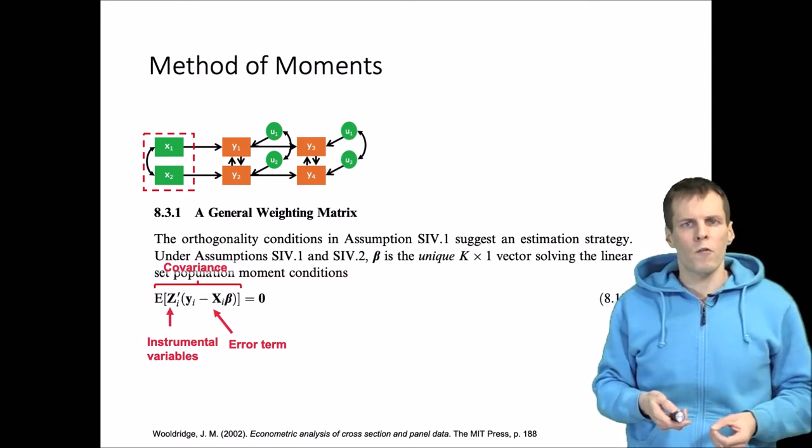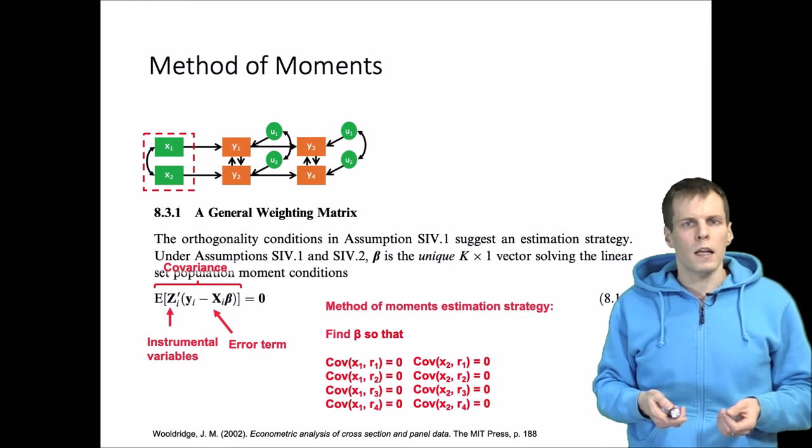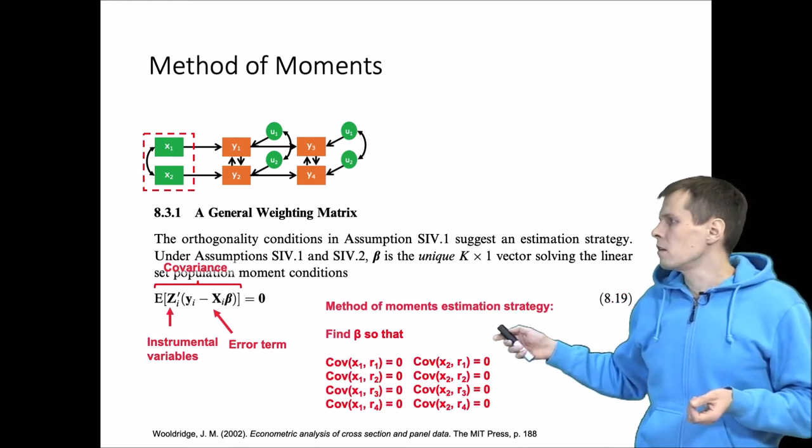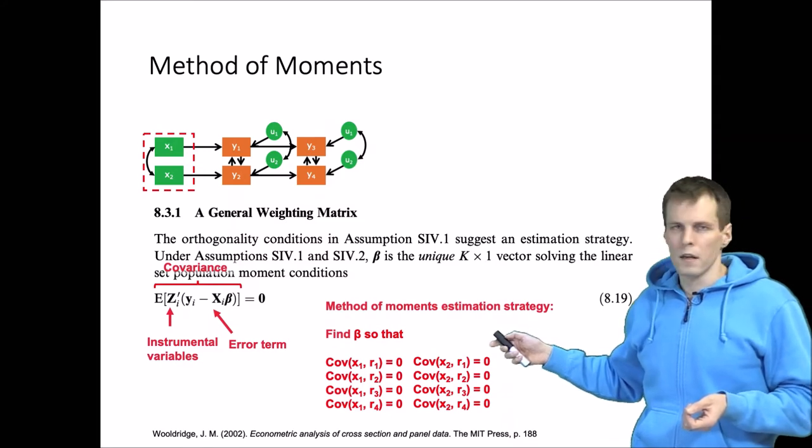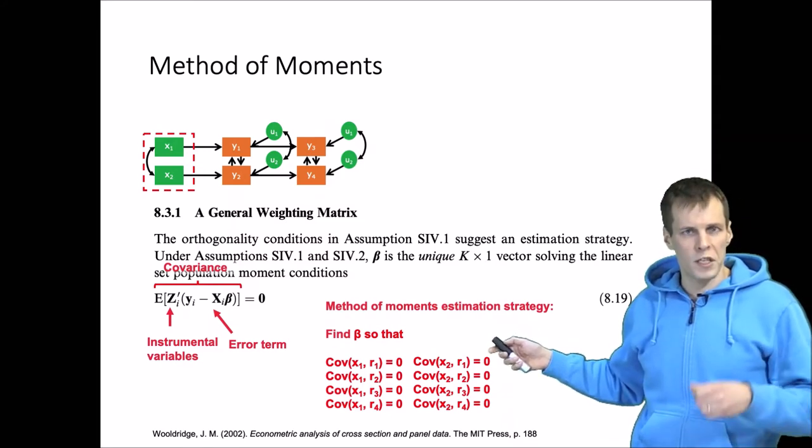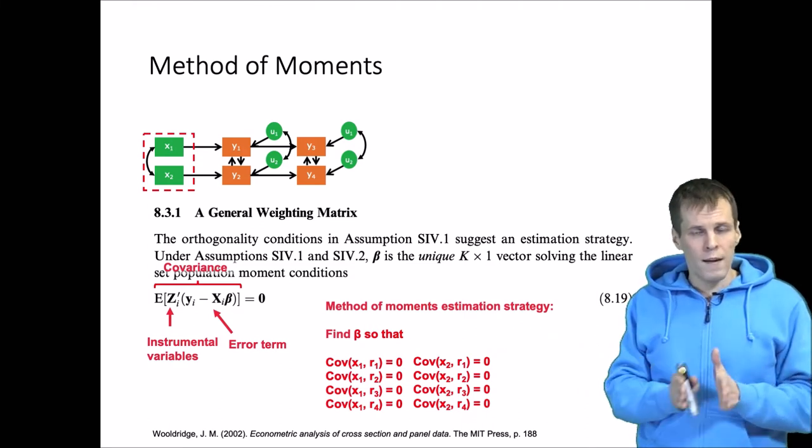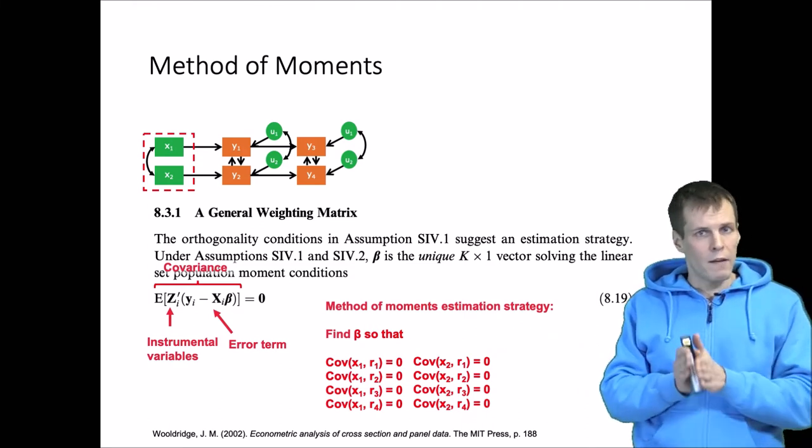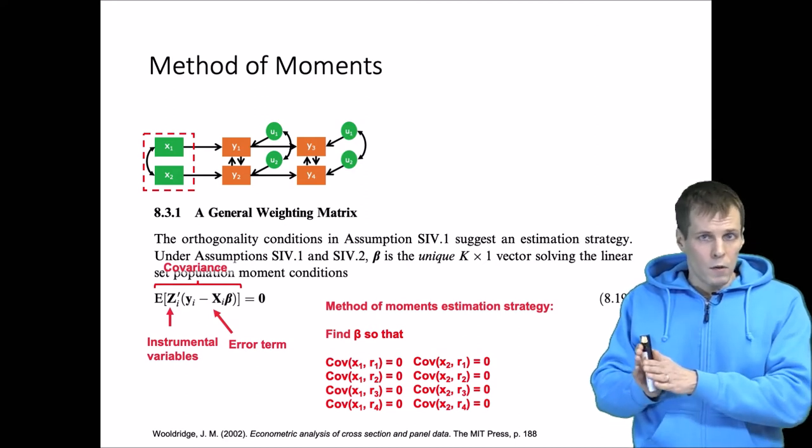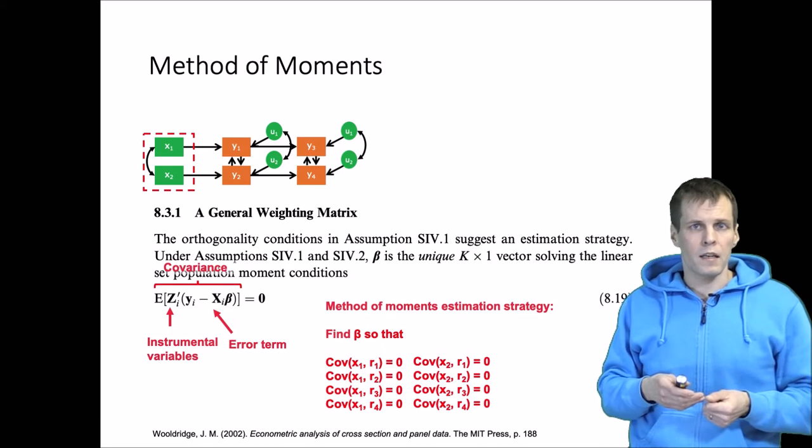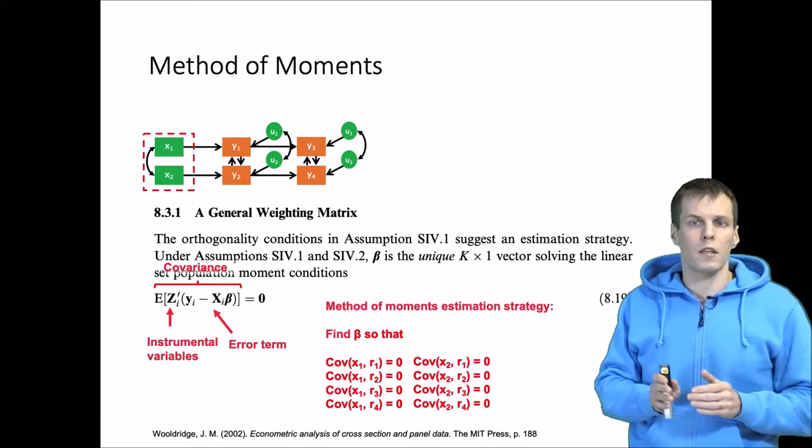The estimation criterion for method of moments is that we find the betas so that the covariance between the instruments and all residuals are zero. Every residual is uncorrelated with every instrument, and we could do mathematical optimization to find the betas and calculate residuals and these correlations.